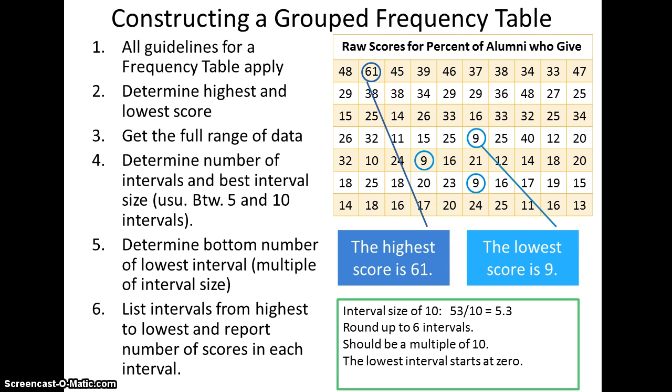Next, we're going to list intervals from highest to lowest and report the number of scores that there are in each interval. So essentially, at this point, we're still figuring out our interval ranges. Our interval size is determined. It's already 10. We know that there's 6. And we're going to then find the frequencies that fall within those ranges.